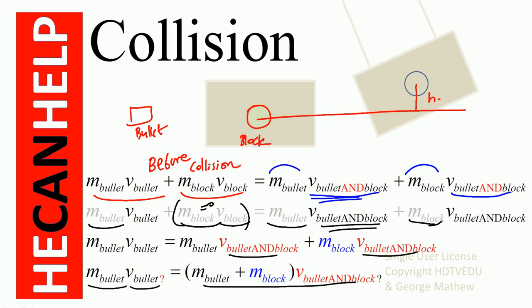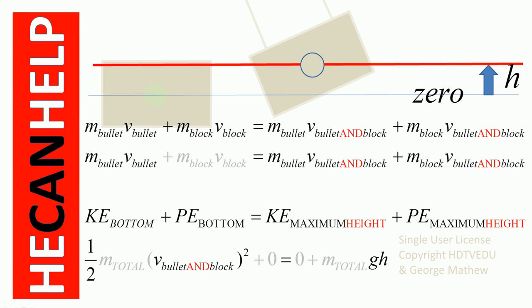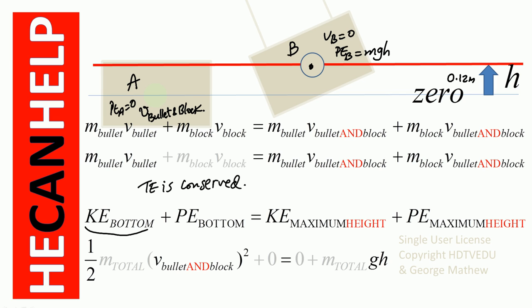We are given h equal to 0.12 meters — the height to which the bullet and block rise — and we're told they momentarily come to a stop at that height. Let's call the bottom point A and the top point B. Speed at point A is the speed of bullet-and-block after collision. Speed at point B is zero. Total mechanical energy is conserved after the collision.